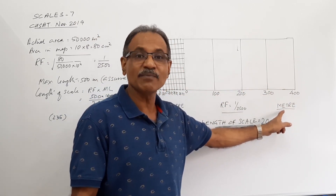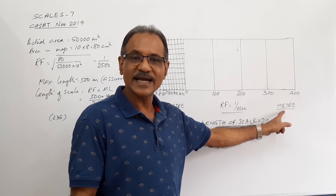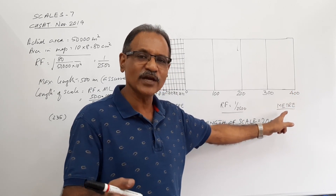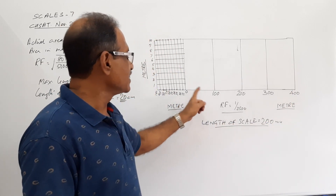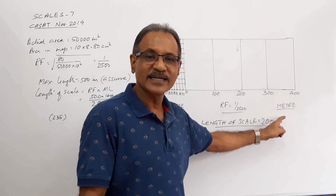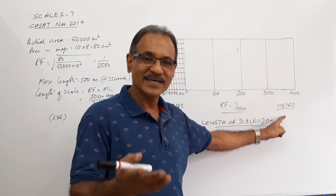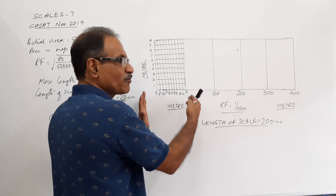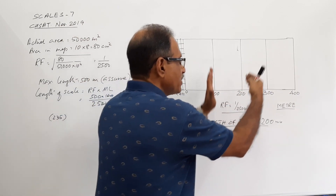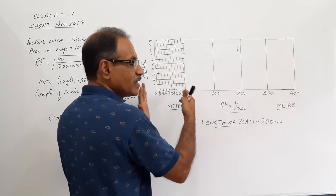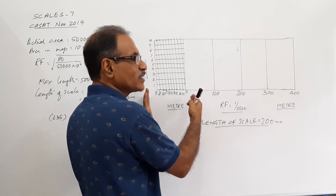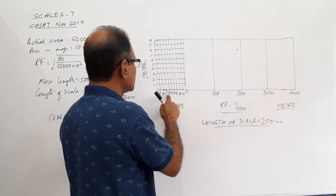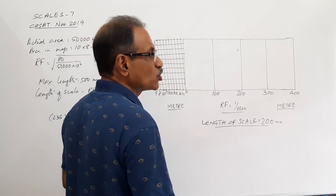The unit would be hectameter — 400 meters is four hectameters — or you can write 0, 10, 20, 30, 40 with the unit decameter. The leftmost division represents 100 meters. I divide this into 10 equal parts so that each division represents 10 meters: 10, 20, 30, 40, 50, 60, 70, 80, 90, 100. I make the divisions on the top also.